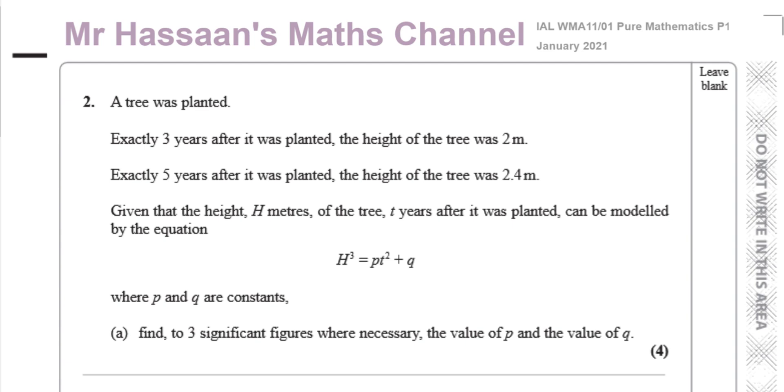This is a question about a tree that was planted. Exactly three years after it was planted, the height of the tree was two meters. Exactly five years after it was planted, the height of the tree was 2.4 meters. Given that the height H meters of the tree, t years after it was planted can be modeled by the equation H cubed equals pt squared plus q, where p and q are constants, find to three significant figures where necessary the value of p and the value of q.